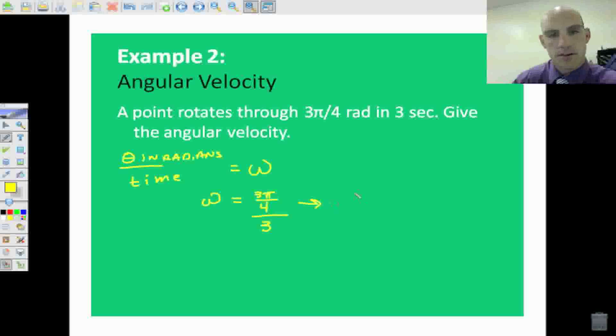And when we convert this, this is going to be 3 pi over 4 times 1 third, because we're going to multiply by the reciprocal. So this is going to be 3 pi over 4 times 3. So we can cancel out our 3's. So we get pi over 4 radians per second. That's pretty much how we go.